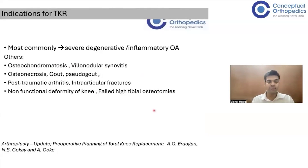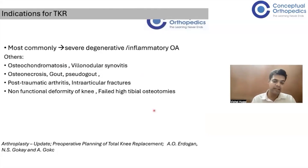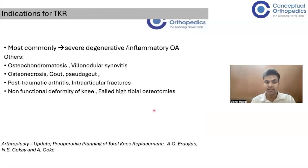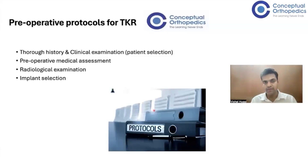Sometimes an acute arthritic knee with intra-articular fractures that cannot be salvaged also has to undergo TKR, and rarely a failed high tibial osteotomy or non-functional deformity of the knee. These are the other indications for which we do TKR, but most commonly it is performed for severe degenerative arthritis. With this background, let us make a protocol for what we have to look for before a TKR.